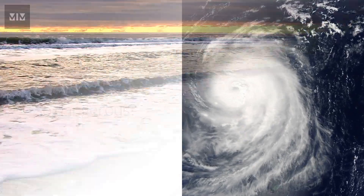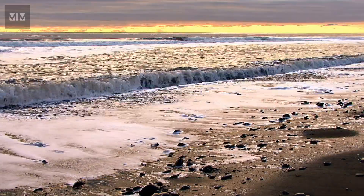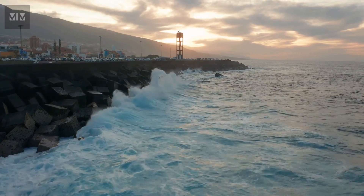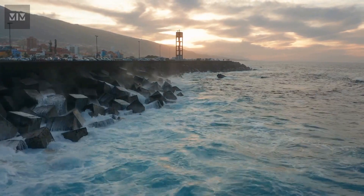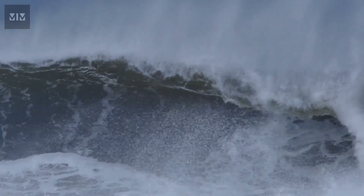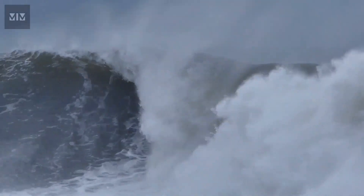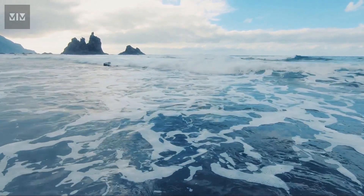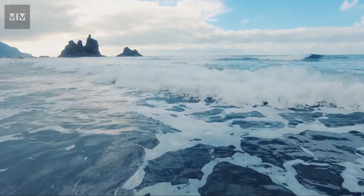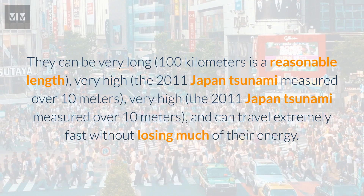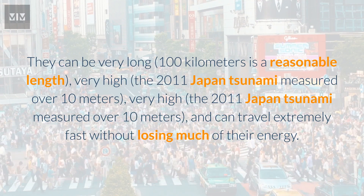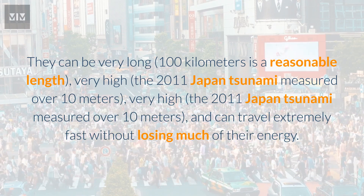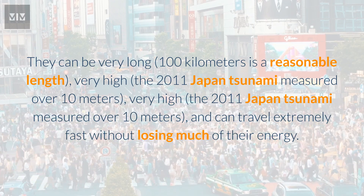Why are tsunamis so dangerous? Tsunamis are not always colossal waves when they come ashore. According to the USGS, most tsunamis do not result in giant breaking waves like normal surf waves that curl over as they approach shore. Rather, they come in much like very strong and very fast tides — a rapid, local rise in sea level. They can be very long (100 kilometers is a reasonable length), very high (the 2011 Japan tsunami measured over 10 meters), and can travel extremely fast without losing much of their energy.